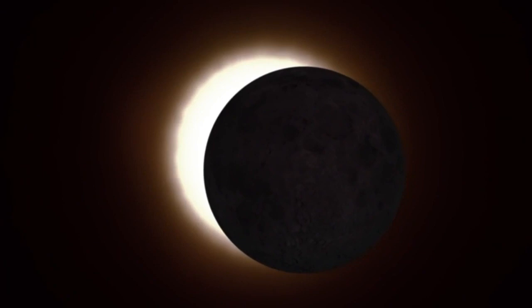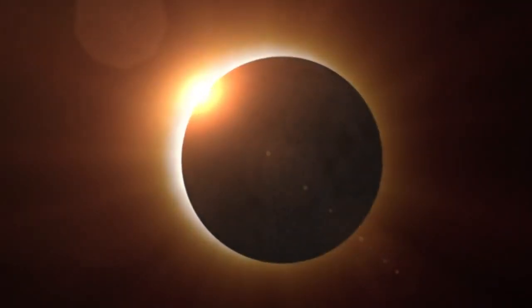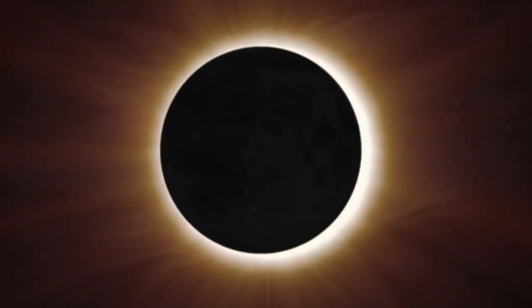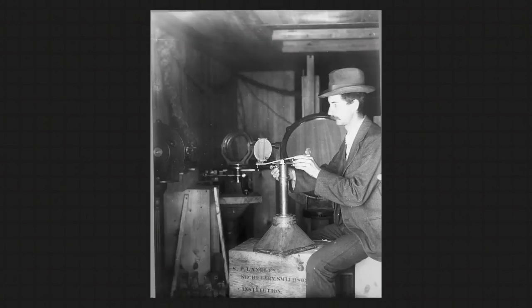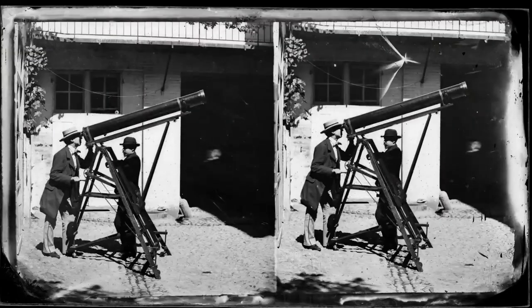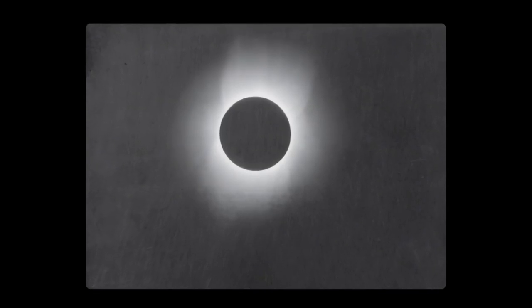The wispy corona is too faint to see most of the time, but it's revealed during total solar eclipses. For centuries, we've been studying the sun's atmosphere during eclipses because it's important for understanding how a star influences life in the solar system. But much about the corona remains a mystery.